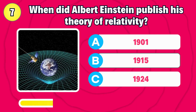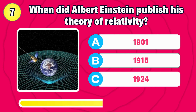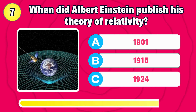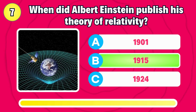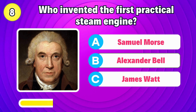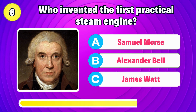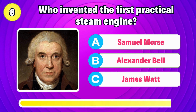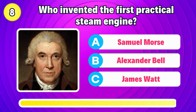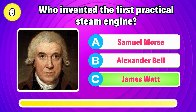When did Albert Einstein publish his theory of relativity? Right, in the year 1915. Who invented the first steam engine? Correct, it's James Watt.